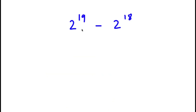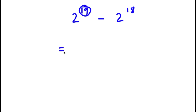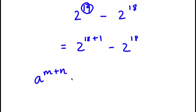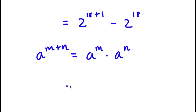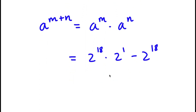In this problem I have 2 to the power of 19 minus 2 to the power of 18. To solve this, I'm going to first rewrite 19 as 18 plus 1. So now I have 2 to the power of 18 plus 1 minus 2 to the power of 18. If I have a to the power of m plus n, this equals a to the power of m times a to the power of n. So 2 to the power of 18 plus 1 becomes 2 to the power of 18 times 2 to the power of 1, minus 2 to the power of 18. From here I can factor out 2 to the power of 18.